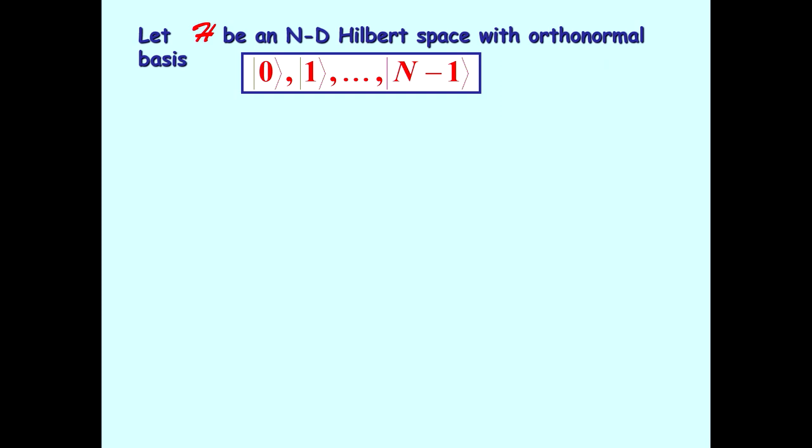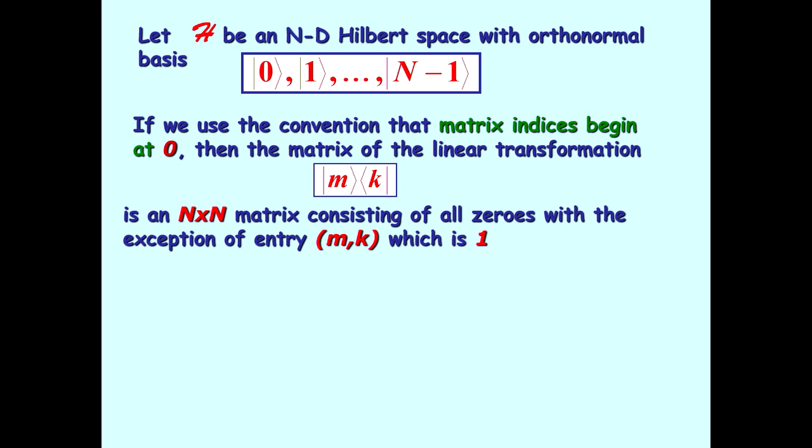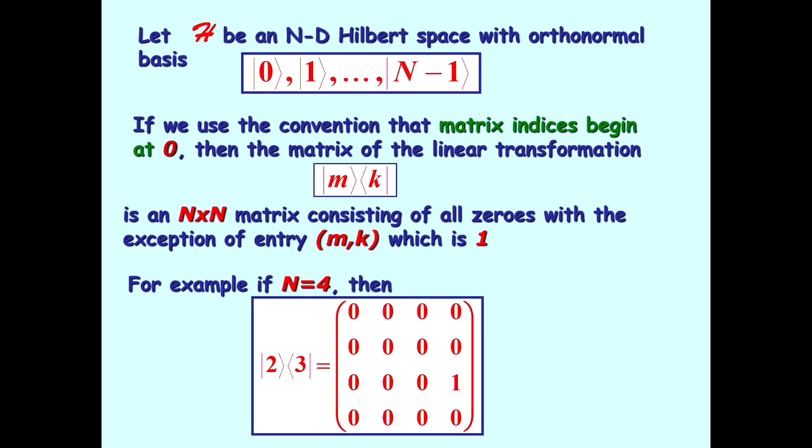So let's let H be an n-dimensional Hilbert space with the orthonormal basis so indicated. And we'll use the convention the matrix is indexed in such a way that the indices begin with zero. Then the matrix of the linear transformation, which is the outer product of ket m with bra k, is an n-by-n matrix consisting of all zeros, with the exception of entry mk, which is one. For example, for n equal to four, ket two times bra three is a matrix with one in entry two, three, and zeros everywhere else. This is a very useful notation.